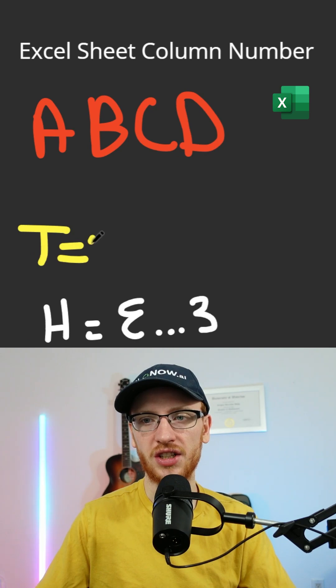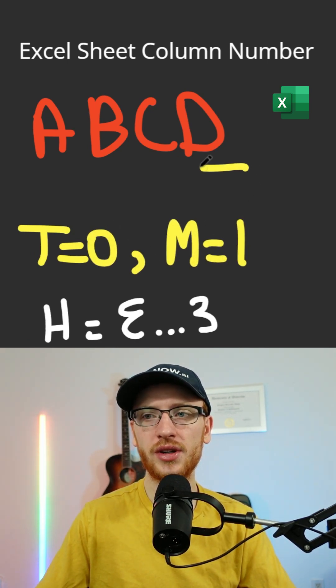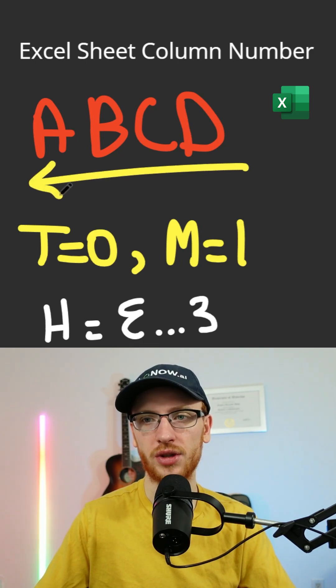Now we need two variables T starting at 0 and a multiplier M starting at 1, and the unintuitive trick to this is actually iterating through the string backwards.